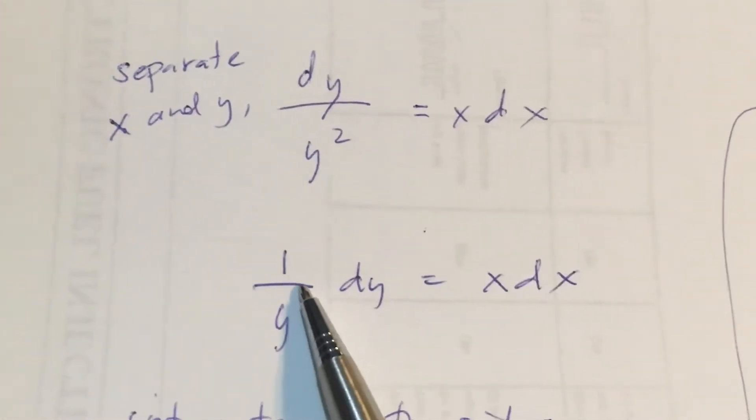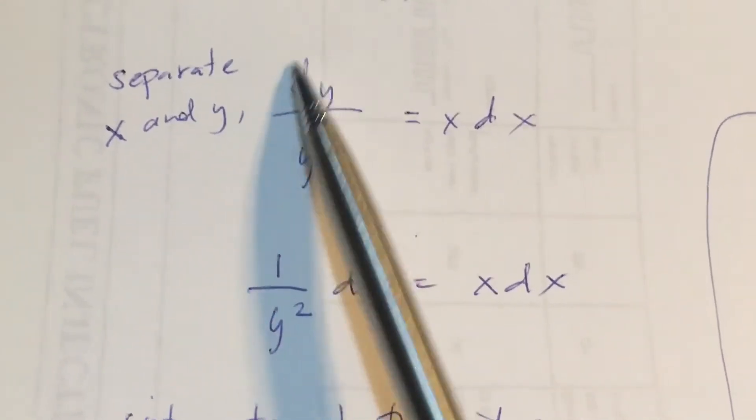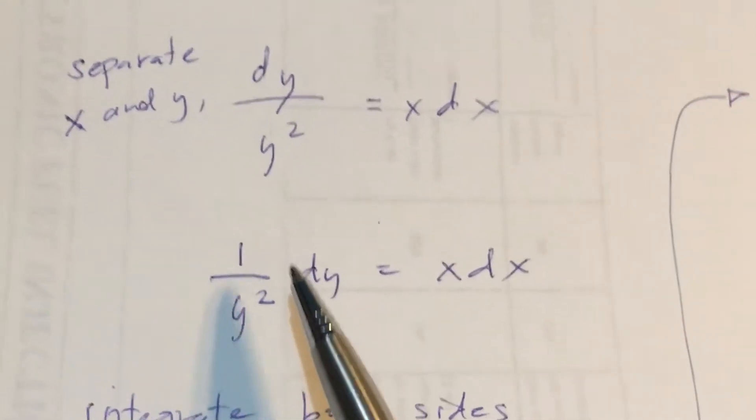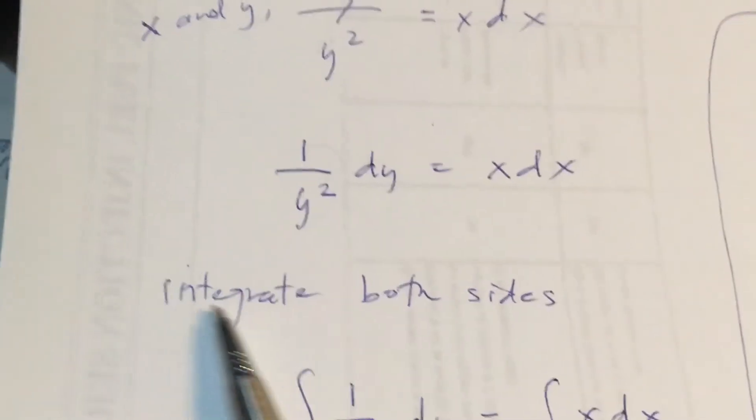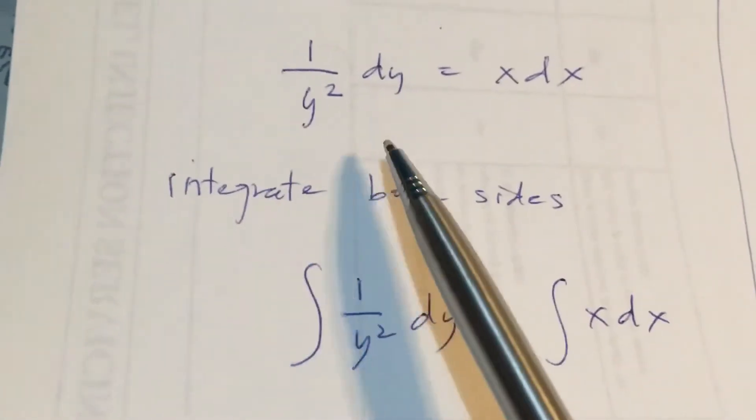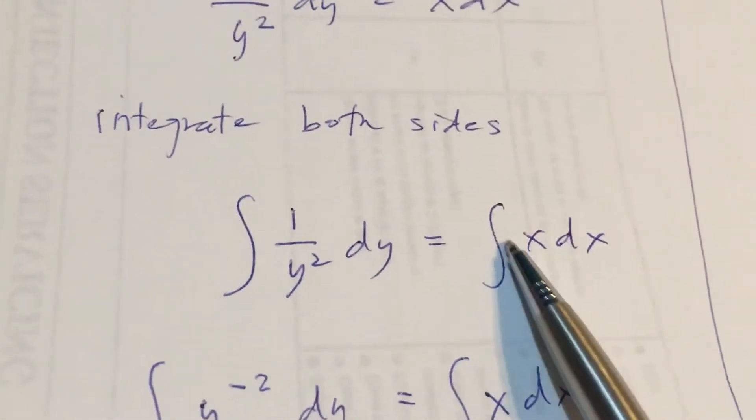So after that, we are going to factor this out. You can make this expression to this kind of expression. Put this down and integrate both sides of the equation. By integrating it, put an integrating sign.